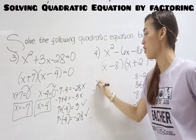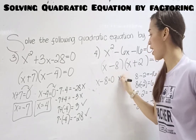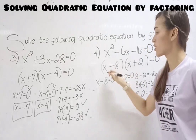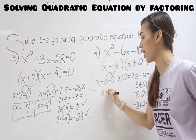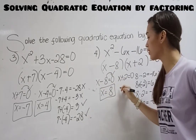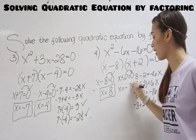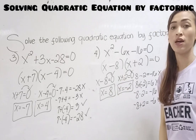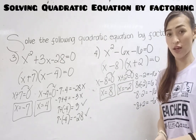Equate to 0: x minus 8 equals 0, and x plus 2 equals 0. Transpose 8 to the right — negative 8 becomes positive 8. Transpose 2 to the right — positive 2 becomes negative 2. The answer is x equals positive 8 and x equals negative 2.